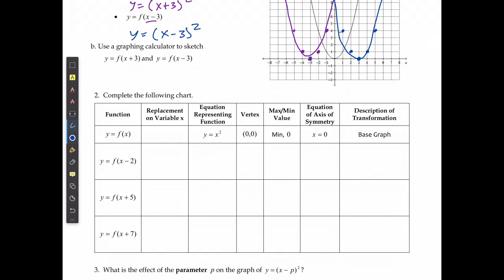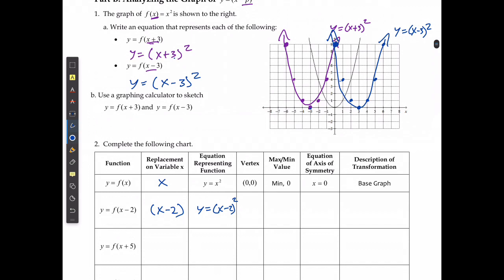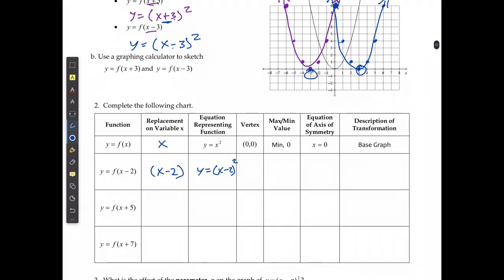For any of these examples, we look at what we're replacing x with. In the original, x is just x. In the second case, replacing x with x minus 2 gives y equals x minus 2 squared. When x plus 3 was used, the graph moved 3 to the left — a plus inside the bracket gives a negative x-coordinate at the vertex, and a negative inside gives a positive. So with x minus 2, the vertex moves right to positive 2, 0.